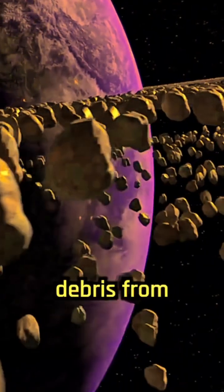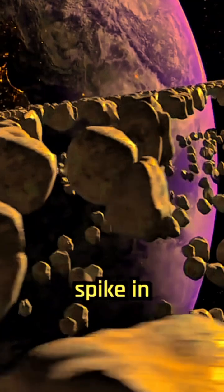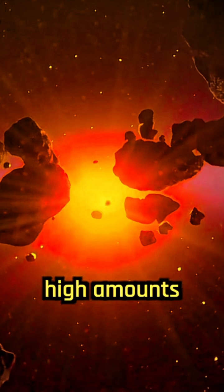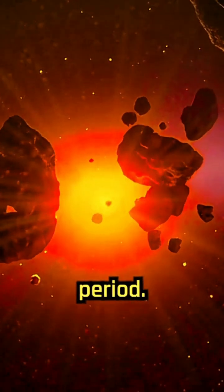Over millions of years, debris from this ring gradually fell to Earth, causing a spike in meteorite impacts, known as the Ordovician impact spike. This hypothesis is supported by the presence of high amounts of meteorite debris in sedimentary rocks from this period.